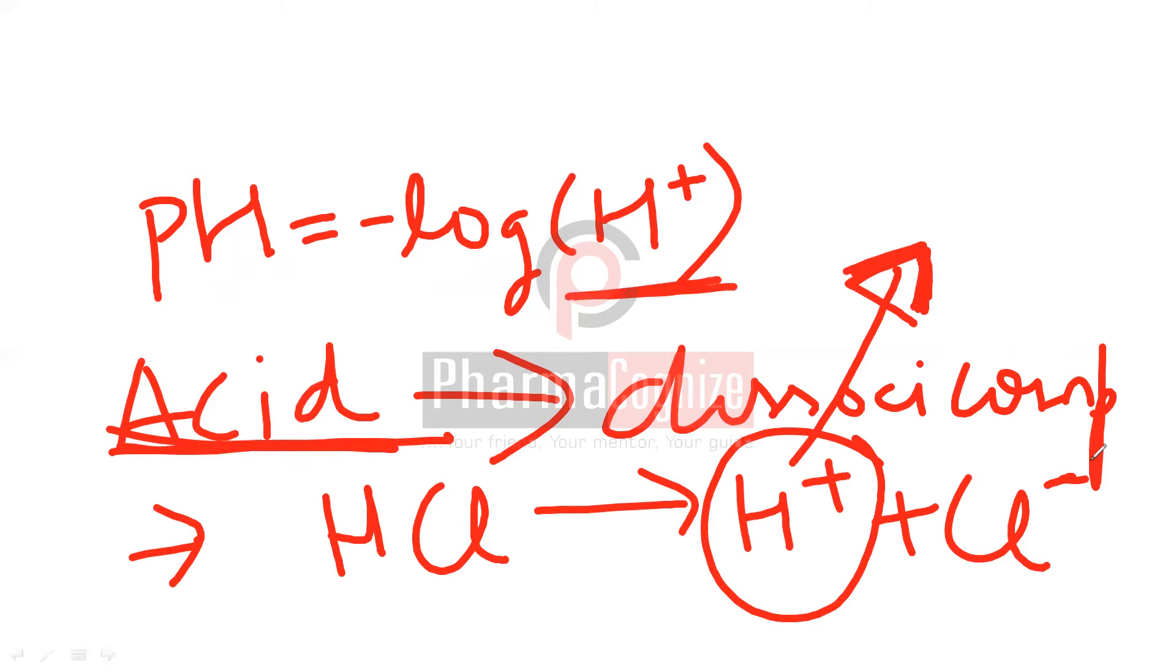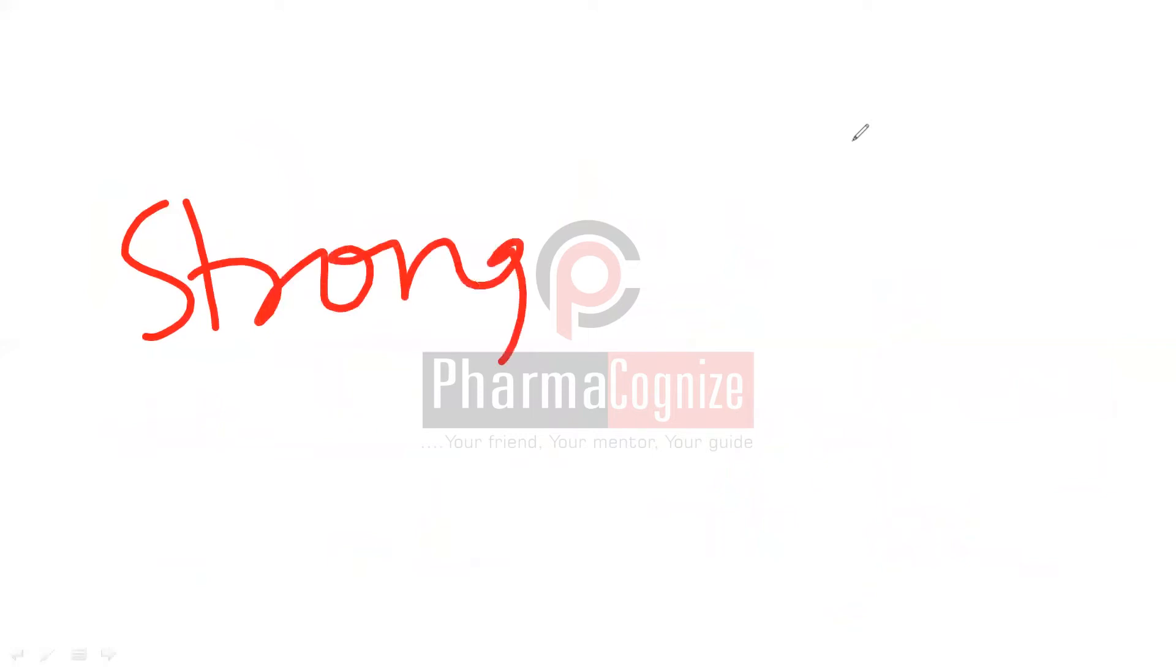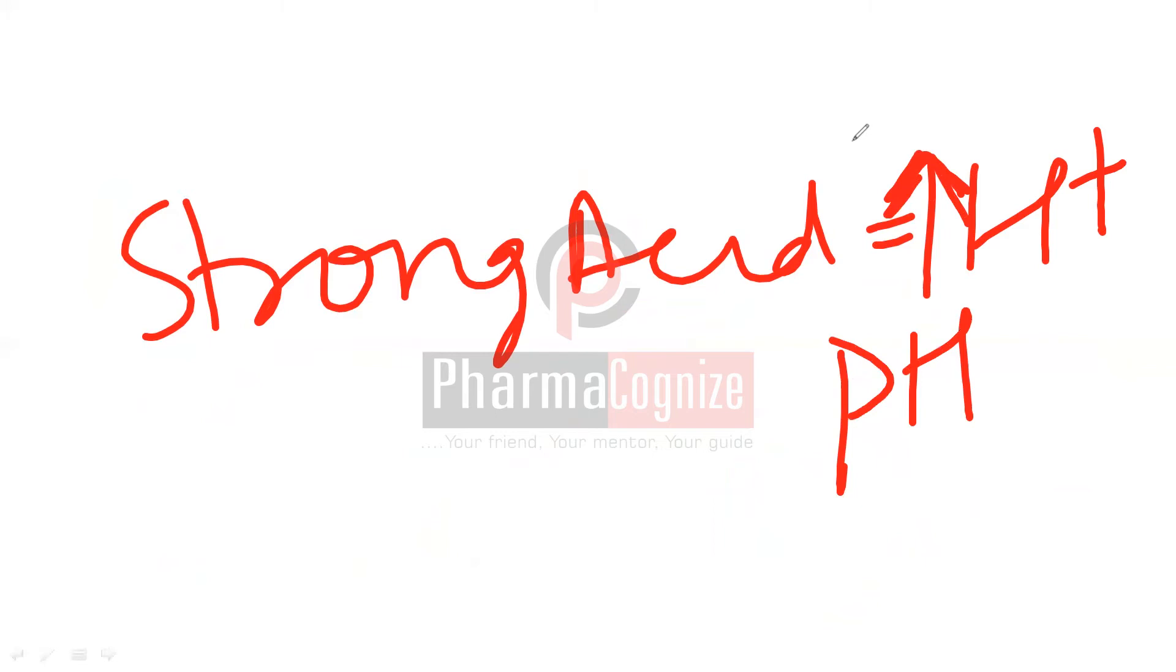If we will put this value in this equation, if I have a strong acid, its concentration of hydrogen ion is very high. So minus log of this would be less. Because minus, when it comes, it means it is decreasing. So as the amount of H plus increases, the amount of pH will decrease. So that's why we say, if the strong acid concentration is higher, the hydrogen ion concentration will be higher, and the pH will be lower.